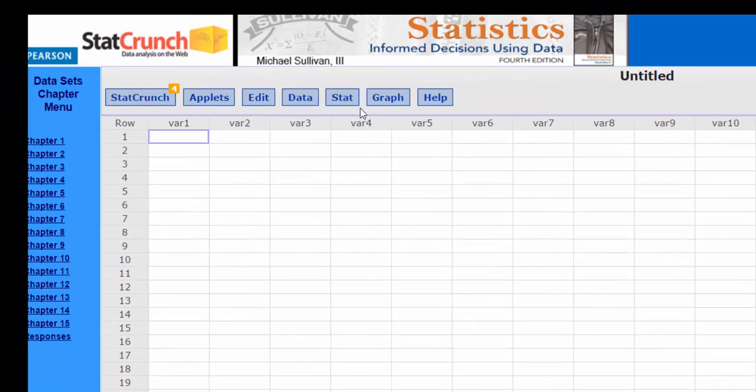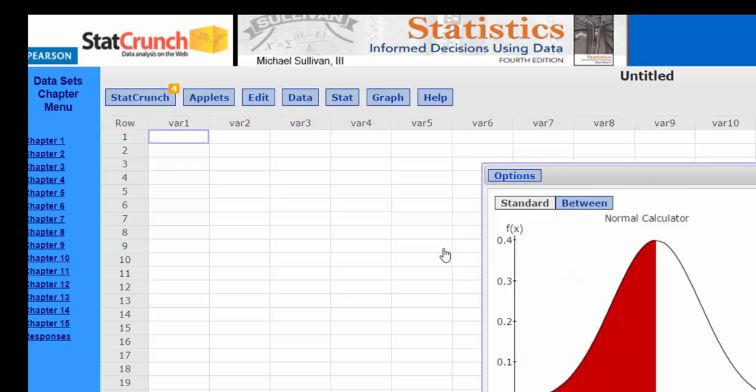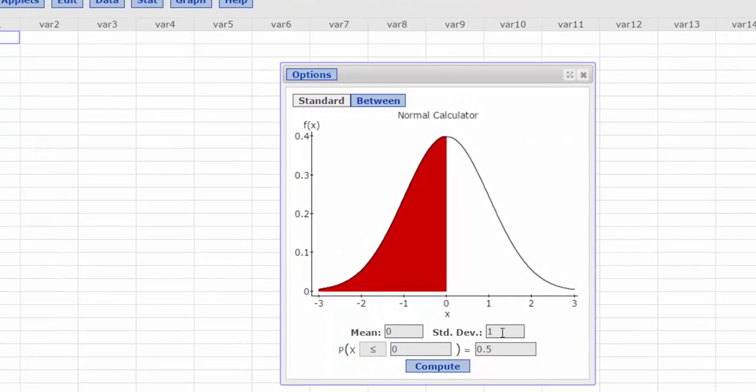So I open up StatCrunch. Again, I click Stat, Calculators, scroll down to Normal, and then enter my mean and standard deviation.